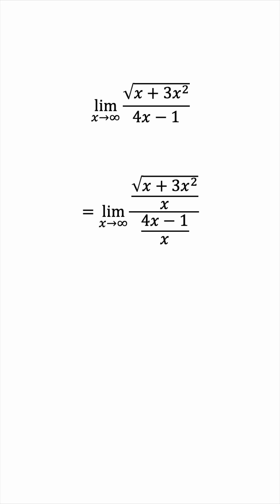How does this help? We can split the fraction in the denominator, and this simplifies to 4 minus 1 over x. For the numerator, we want to insert the x inside the square root. In order to do this, we'll rewrite x as the square root of x squared.